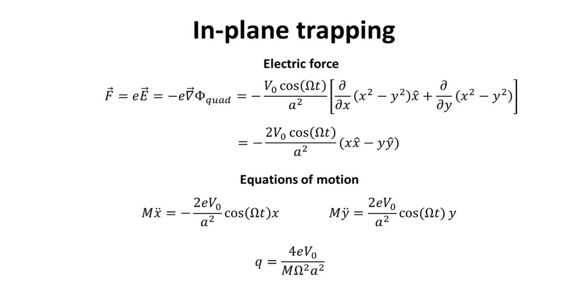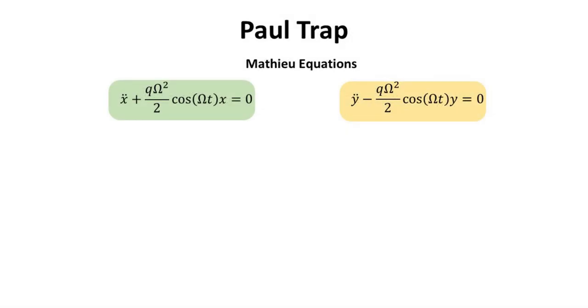Next, we introduce the dimensionless parameter Q. Intuitively, Q gives the ratio between the applied electrostatic energy to the rotational kinetic energy. In the trapping experiment, we are in the regime where Q is small. We can rewrite these equations in terms of Q as follows. These are the so-called Mathieu equations, whose solutions are the Mathieu functions.